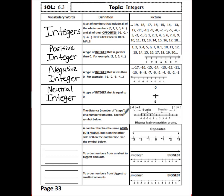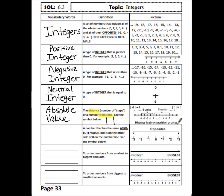The distance, or number of steps, of a number from 0. The two up and down lines show the absolute value. Distance from 0 is the most important part to remember when finding the absolute value. The absolute value of negative 4 is 4 because you count 4 spaces or jumps away from 0. The absolute value of 5 is 5 because there are 5 jumps to get from 0 to 5. Distance is always positive or 0.